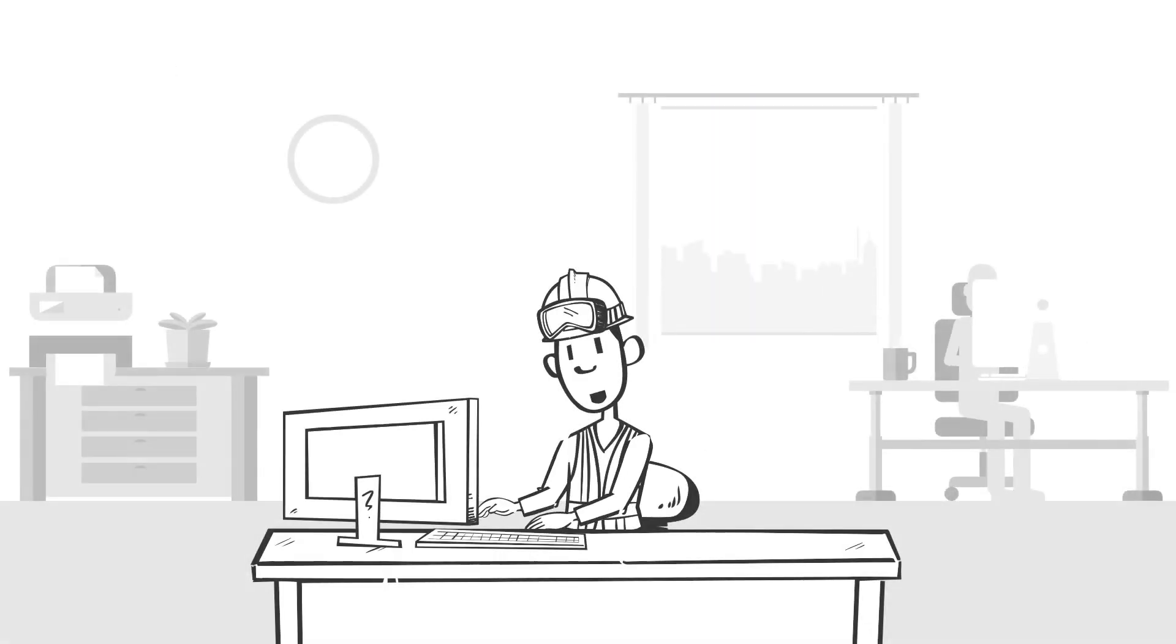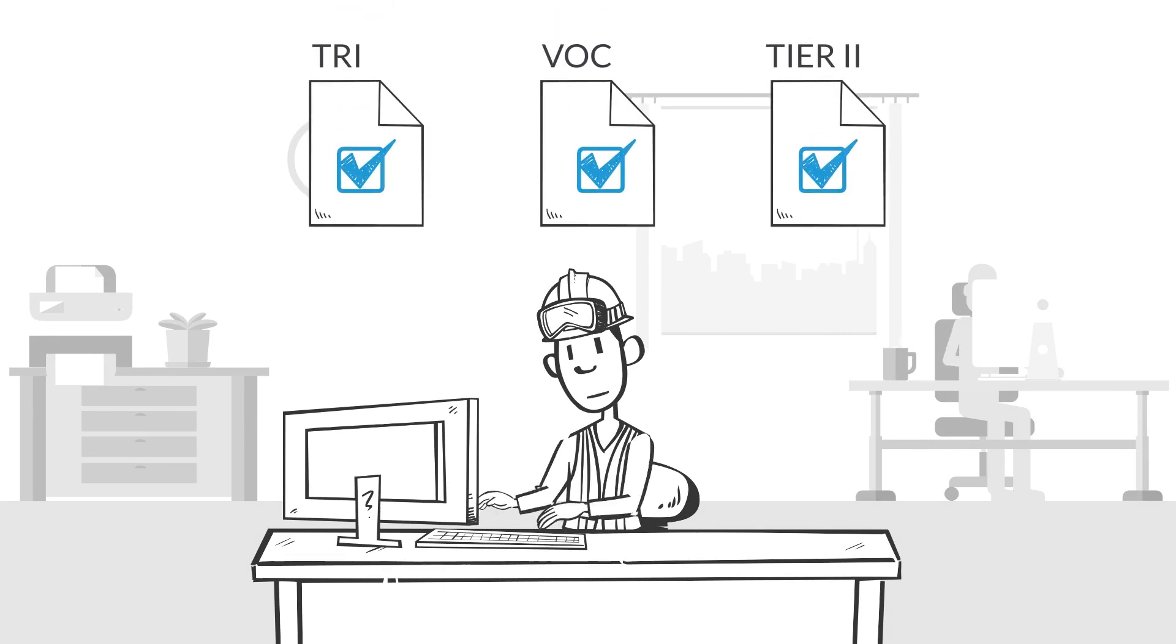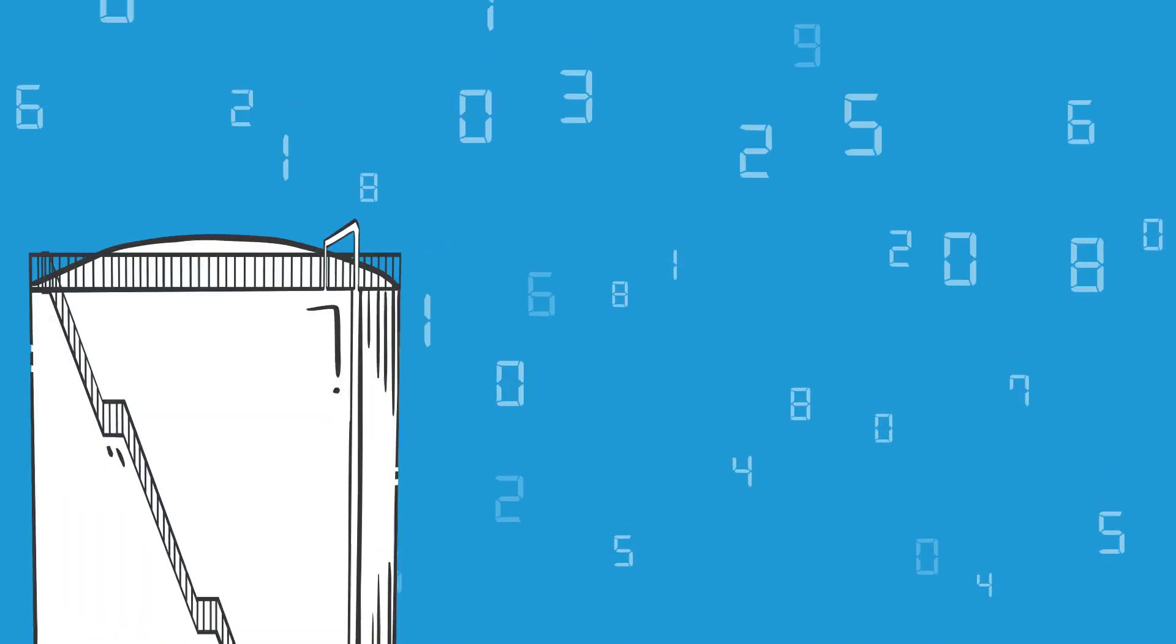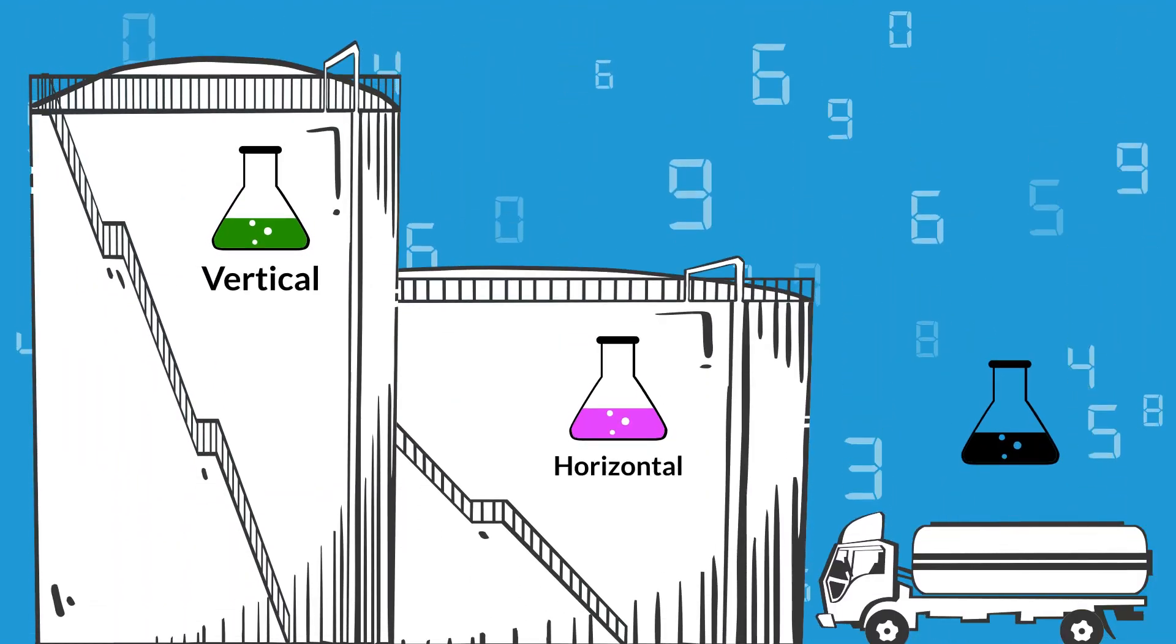With Tank Software, our facility can produce the most accurate emission reports for a wide range of tank types and tank events. ERA makes it simple to calculate emissions from our entire battery of tanks, no matter what chemicals we manage or which types of tanks we use.